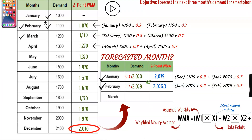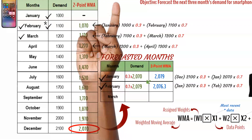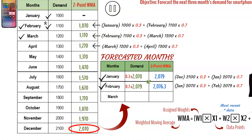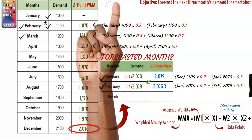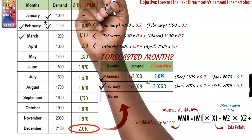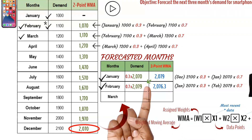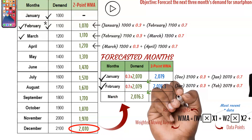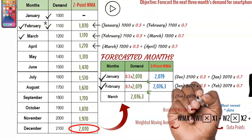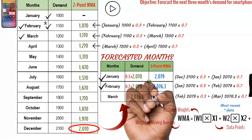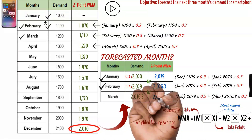Would you like to pause the video and have a go at forecasting the demand for March and then calculate the two-month weighted moving average? Please pause the video now. If you have calculated correctly, your workings should be similar to what is shown and the answers should match what is written in the column.